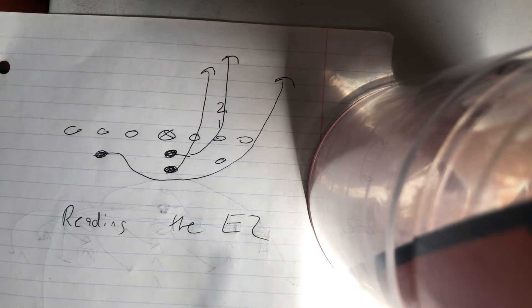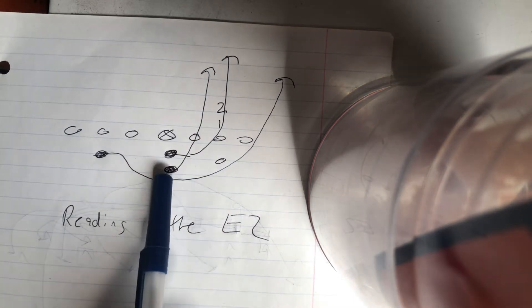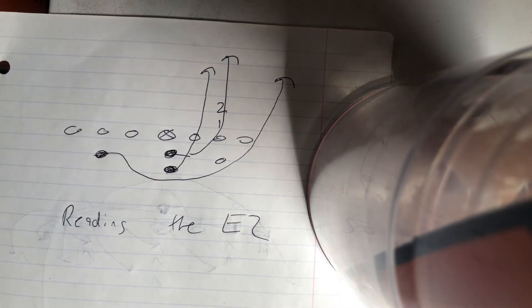That's all it is to reading the easy stunt. I start from the top down. So if number two moves to the B-back, he's going to replace. If two doesn't do anything, he gets his eyes on one. If one takes the B, he replaces. And you go from there.